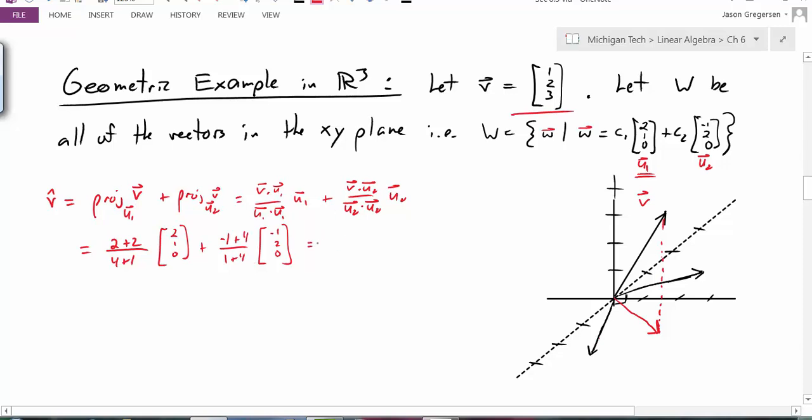So this looks like 4 fifths times our first basis vector plus 3 fifths times our second basis vector. I've drawn those two basis vectors on there. It looks like I take 4 fifths of that first basis vector, so maybe I come out to about here. And I take 3 fifths of the other one, which is a little bit smaller. I take the sum of those two vectors, which we can see really does guide me to this projection vector.